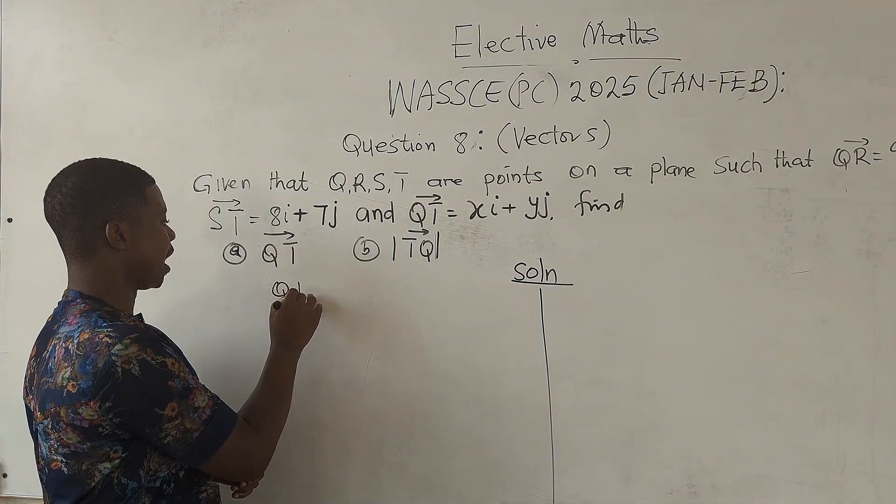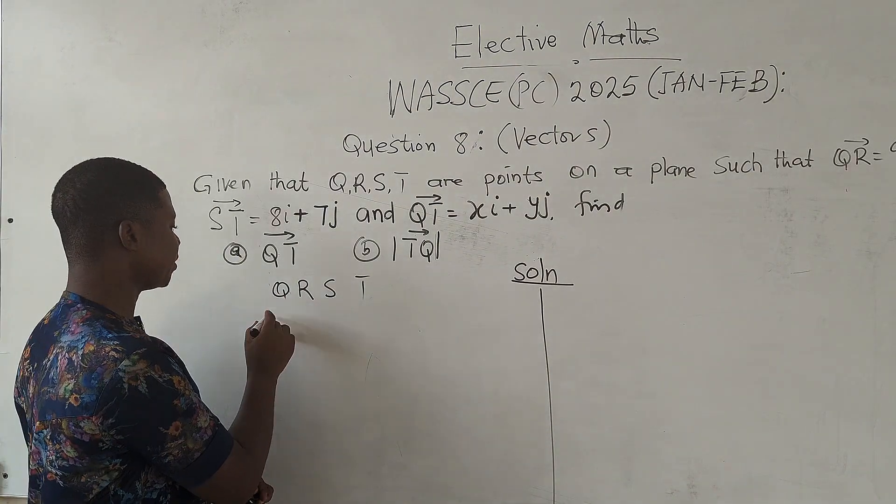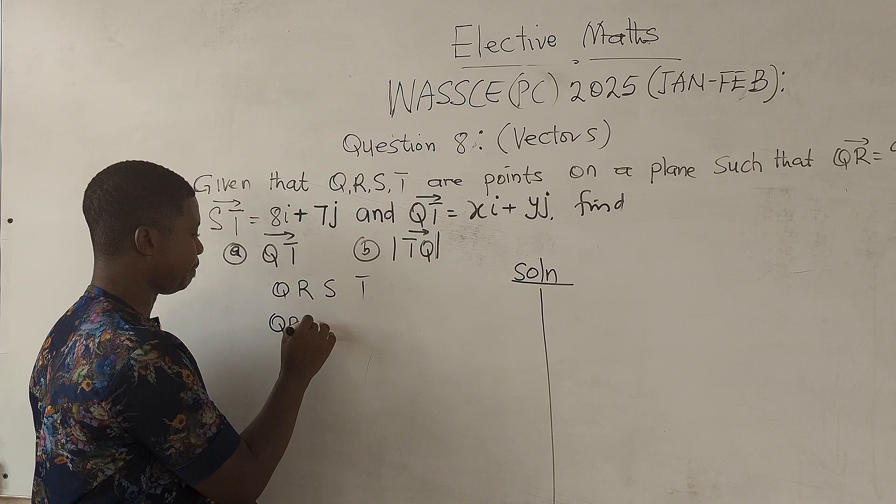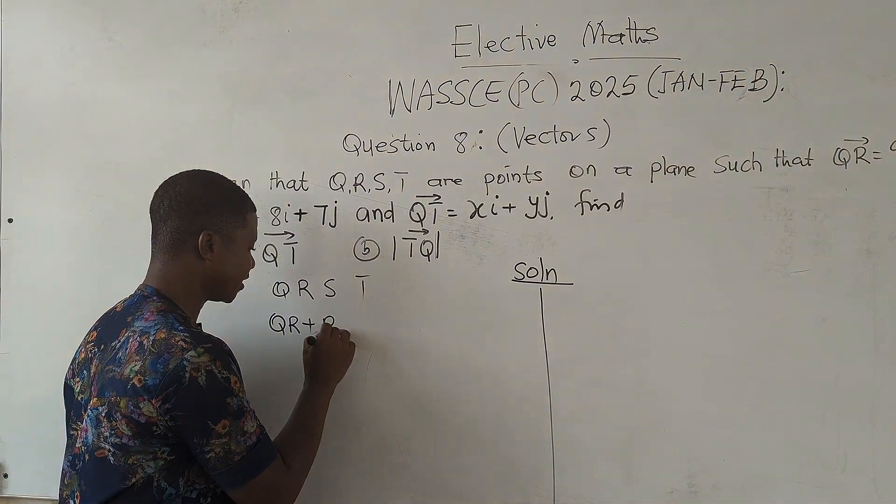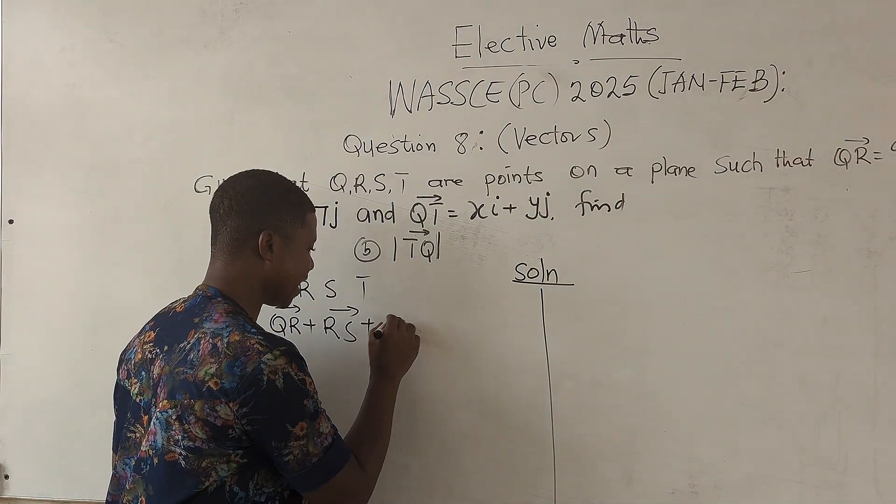you have Q, R, S, T. So if you want to look at the order, then it becomes QR plus vector RS plus vector ST,